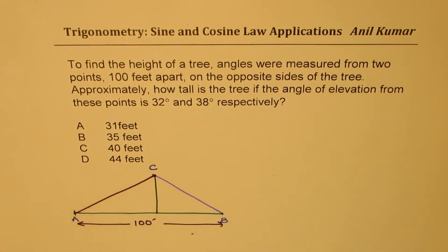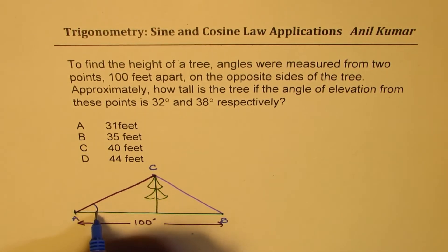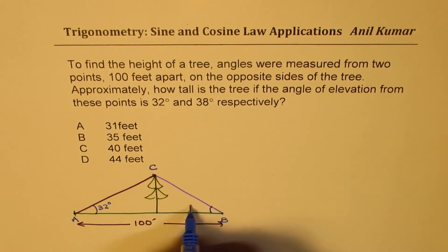So this becomes our tree. We have a lot of these evergreen trees here. The angles are 32 and 38 degrees, so let this be 32 degrees and that one 38 degrees.